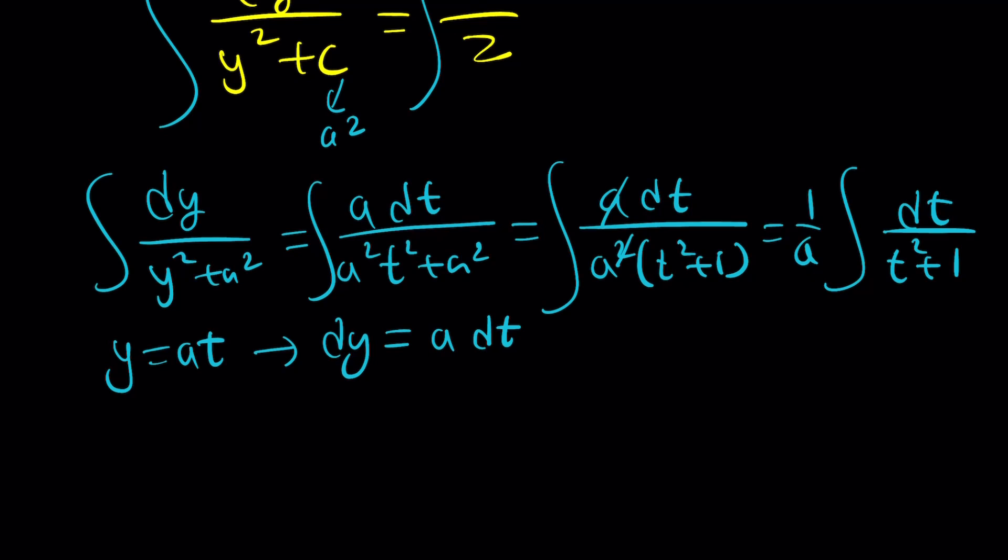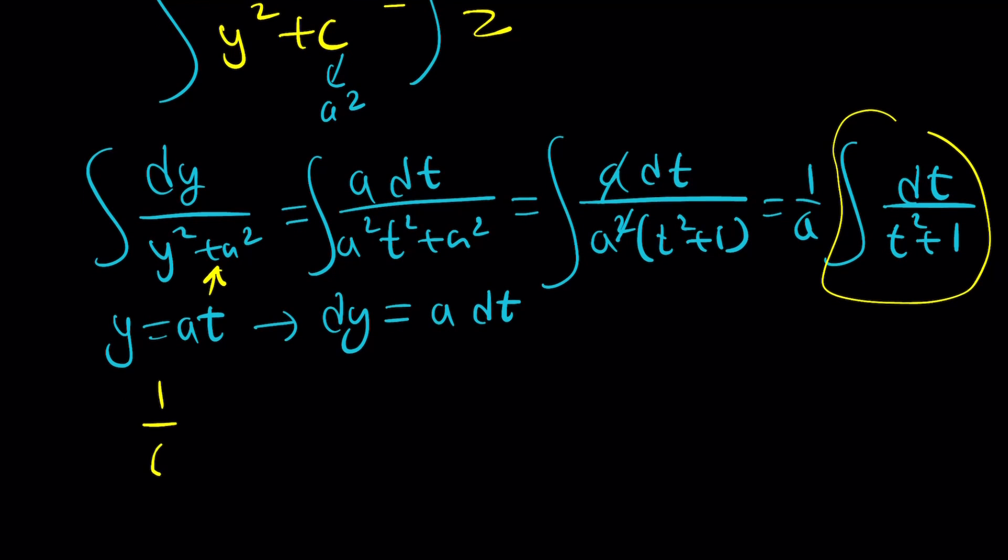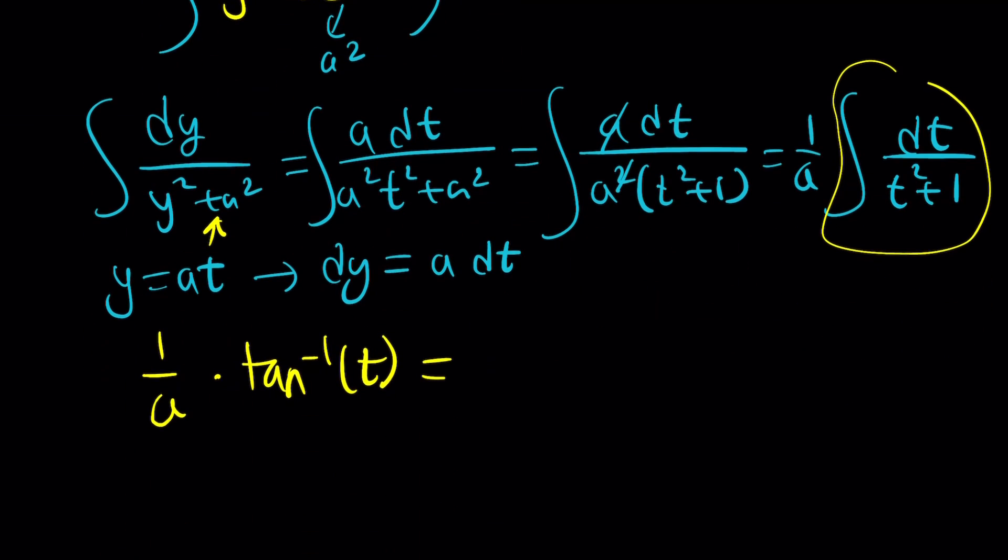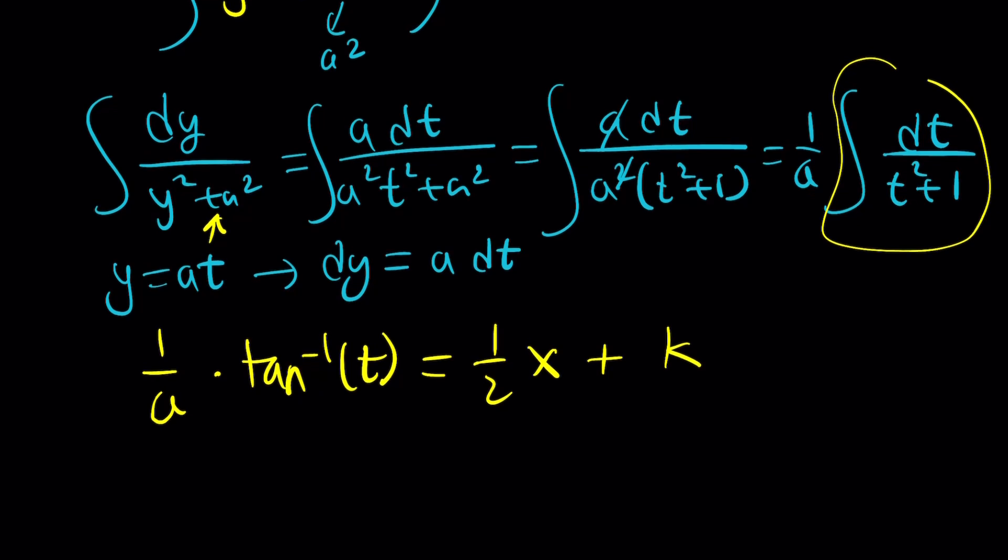So, this integral is pretty easy. We have a formula. We even have formulas for these kinds of things. But I don't know if you want to memorize it. But this turns into 1 over a times tan inverse of t. I'm not going to write the constant yet. But this is equal to the integral of dx over 2. Which is 1 half of x plus a constant. But I'm not going to use c because I already used it. I'll back substitute it.